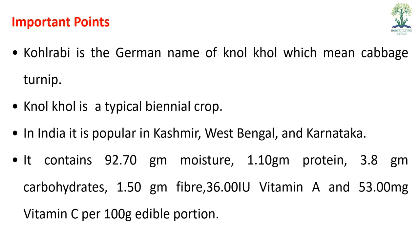Important point: Kohlrabi is the German name of Nolkhol, which means cabbage turnip — गोभी-शलगम। Nolkhol is a typical biennial crop. यह biennial होती है — द्विवर्षीय, अगर इसको vegetable के लिए उगाया जा रहा है तो यह annual ही है, अगर seed production तक लिया जाए तो biennial होती है। In India, it is popular in Kashmir, West Bengal, and Karnataka।